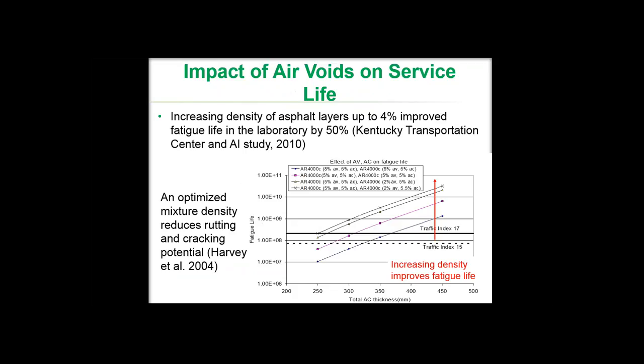An example from the literature shows the impact of density on service life in the laboratory environment. A study from the Kentucky Transportation Center and the Asphalt Institute in 2010 showed that fatigue life in the laboratory can be increased by 50% when the density of asphalt layers is increased. A second study from California on optimized mixture density showed that increasing the density from 8% to 5% air voids improves fatigue life in lab experiments.